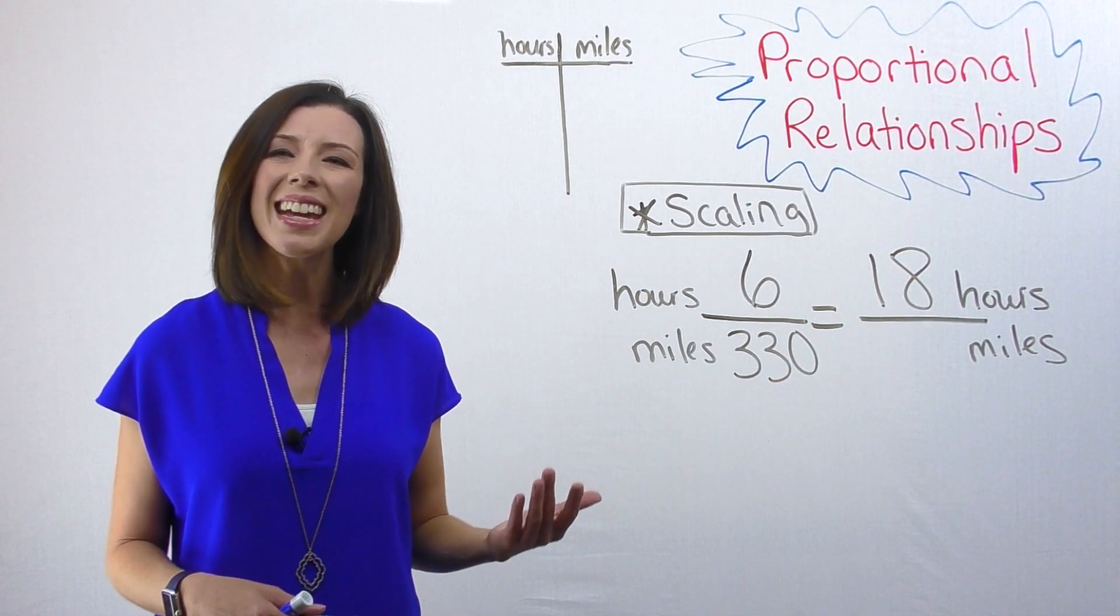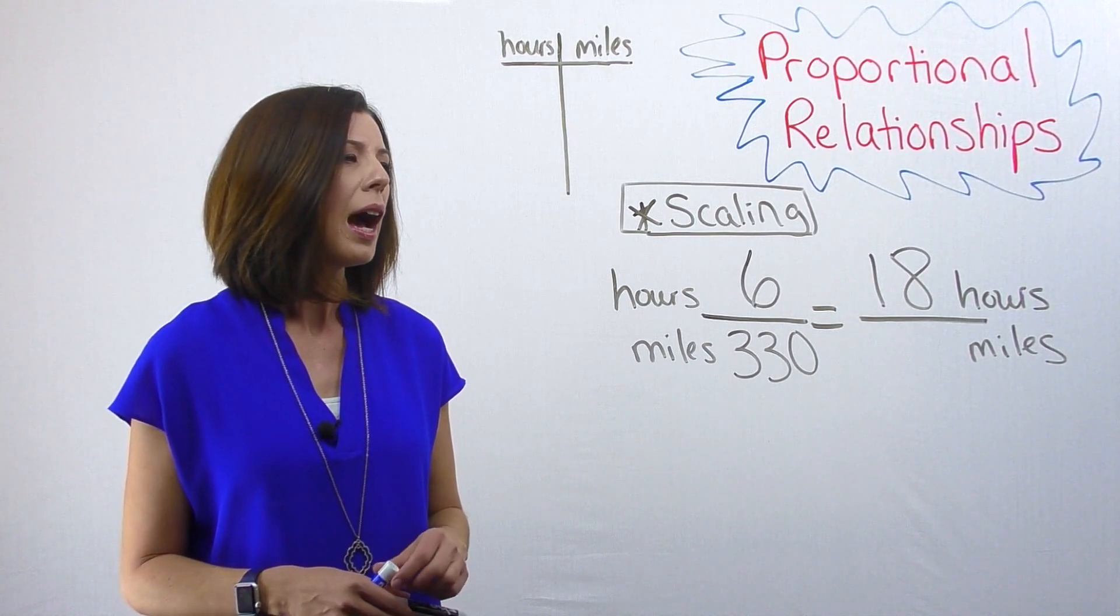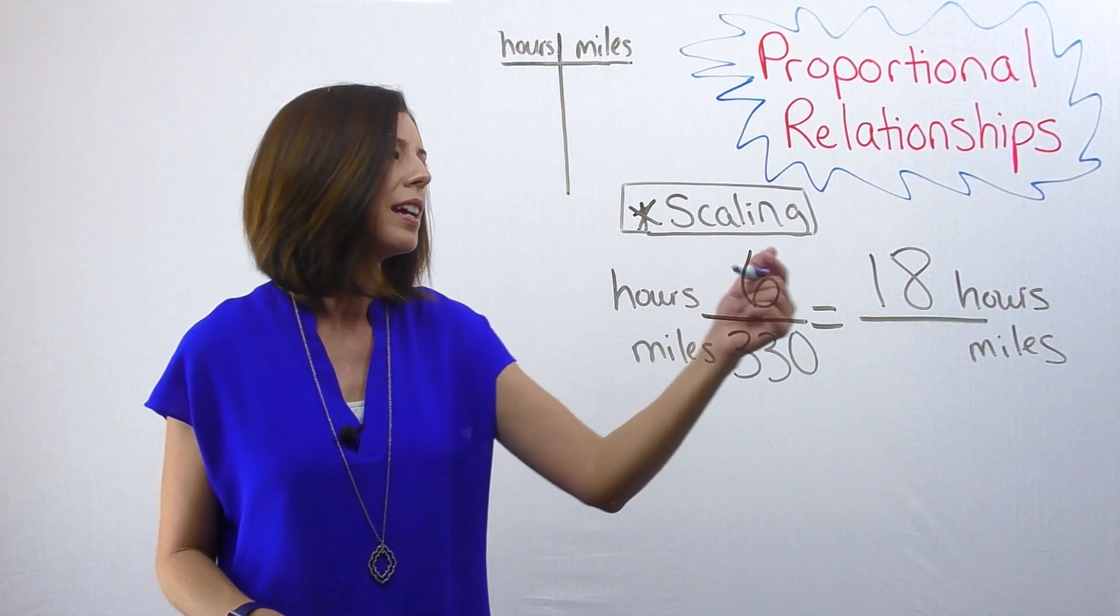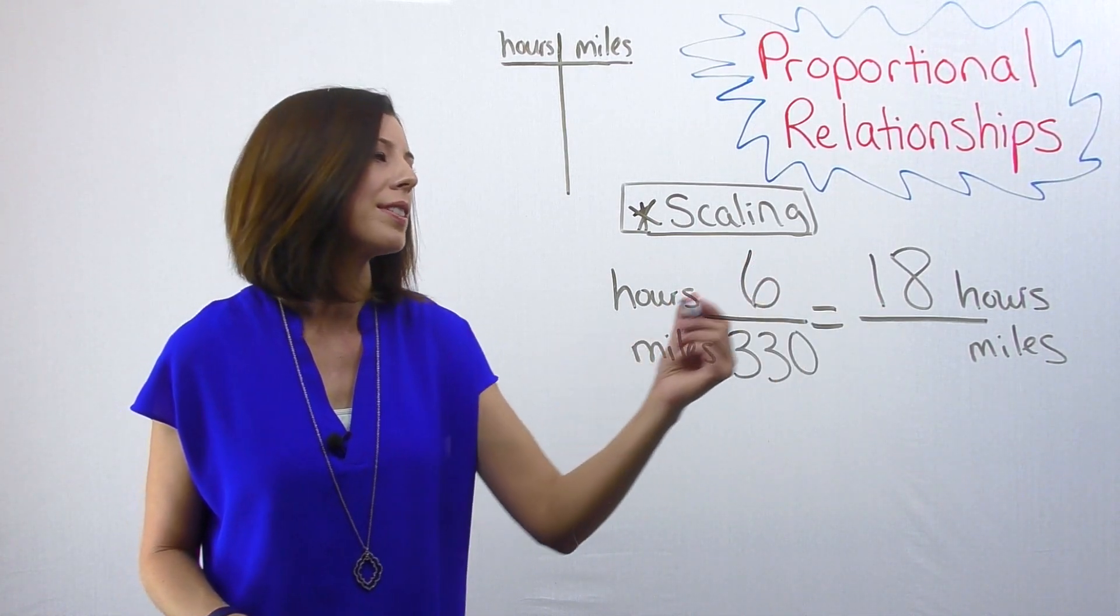If I'm using the scaling type of proportional reasoning, I'm trying to figure out six times what number gives me 18. I know that six times three.